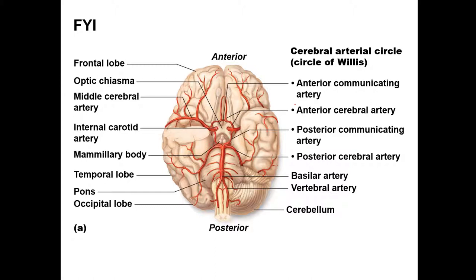The one thing I do want you to know is the circle of Willis — basically how the brain's blood supply is provided. It's the circuit that provides blood flow to the brain. You don't need to know all the individual cerebral artery names — just understand what the circle of Willis is and that it's how the brain gets serviced by the cardiovascular system.